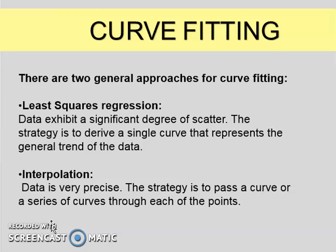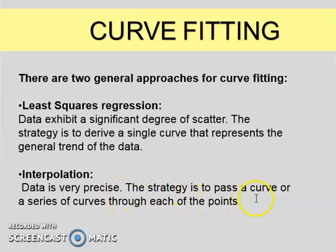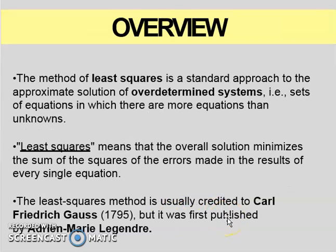For curve fitting, there are two general approaches. The first one is least squares regression, and the next one is interpolation. When data exhibits a significant degree of scatter, the strategy is to derive a single curve that represents the general trend of the data. For interpolation, the data is very precise and the strategy is to pass a curve or series of curves through each of the points.